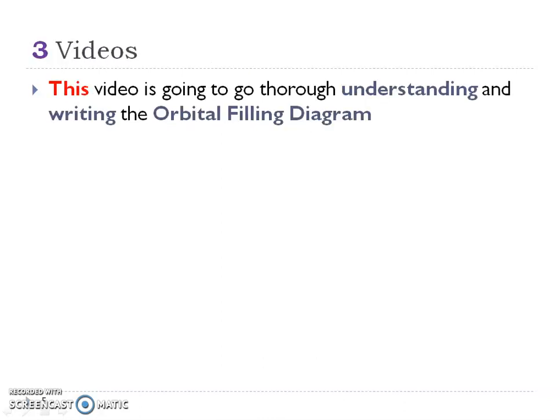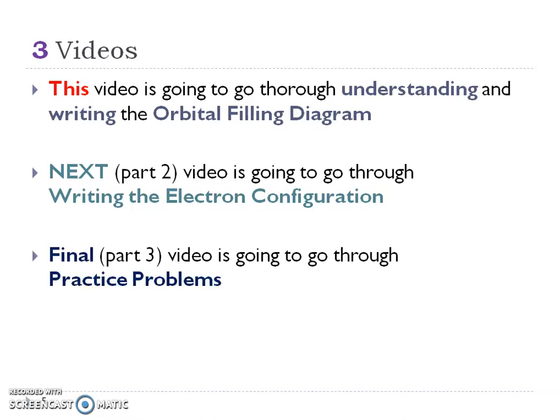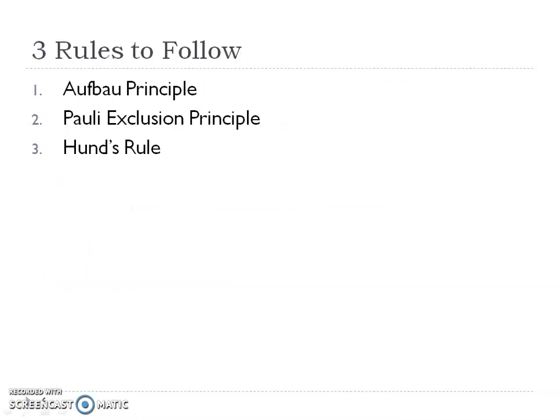There are actually going to be three videos to this section. This video is going to cover the orbital filling diagram. The next video will talk about electron configuration and how to write those, and then part three is going to go through the practice problems. So there are three rules to follow: the Aufbau principle, the Pauli exclusion principle, and Hund's rule.